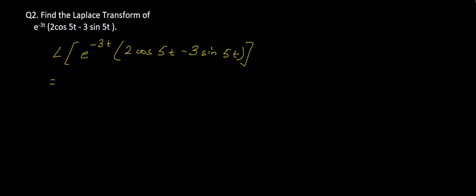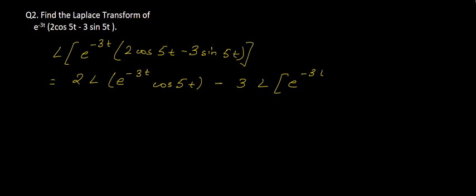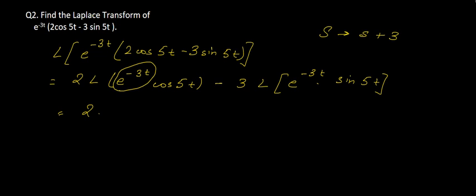We need to multiply e to the power minus 3t with each term. We know that the Laplace Transform of cos 5t will be s by s square plus 25, but here we have e to the power minus 3t so our s will become s plus 3. Accordingly we replace the value, so here we'll have (s plus 3) by (s plus 3) whole square plus 25, minus 3.